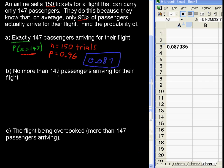No more than 147 passengers arriving for their flight. And this is the way Excel takes in the information. Now, the N, P, and X are still the same, but this one is asking no more than. And so, what is the probability that X is less than or equal to 147? That's the notation for what is being asked here.